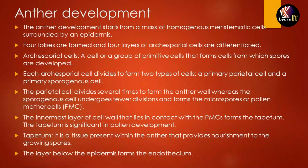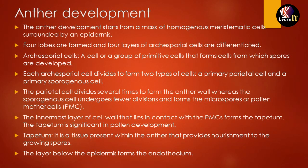Anther development starts from homogeneous meristematic cells surrounded by epidermis. These develop into four-layered archesporial cells, which are differentiated into different parts. Archesporial cells are primitive cells from which spores will develop. These archesporial cells divide into two types: primary parietal cells and primary sporogenous cells. Parietal cells divide into the different forms of anther walls, while sporogenous cells divide to form microspores, also called pollen mother cells (PMC).